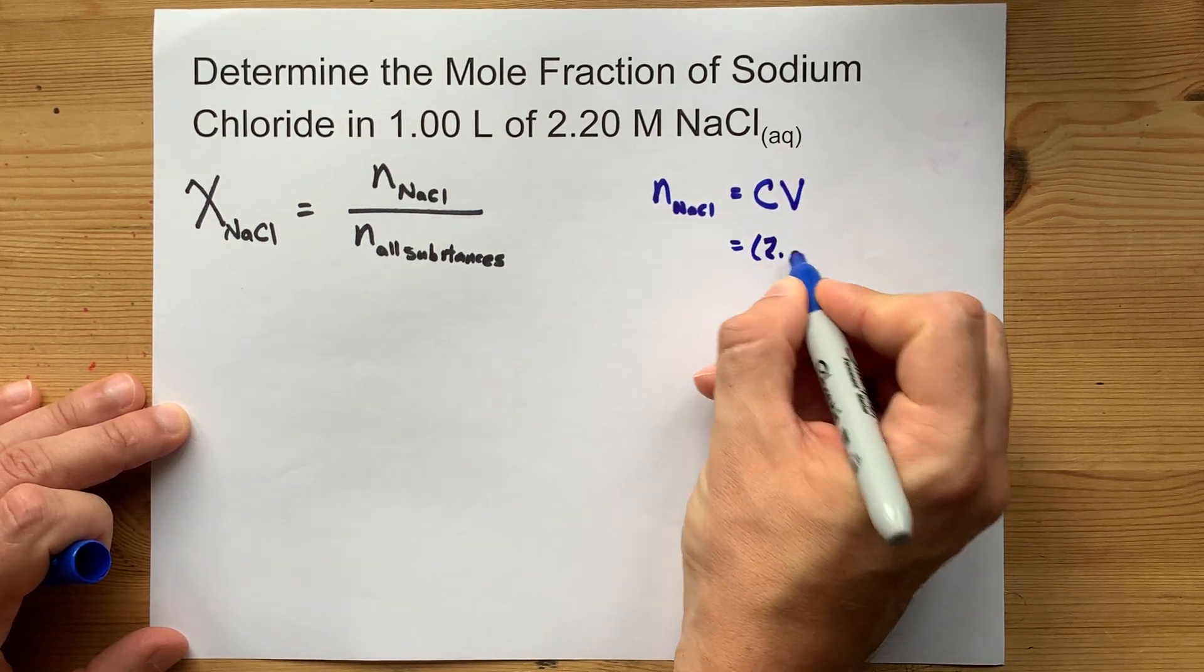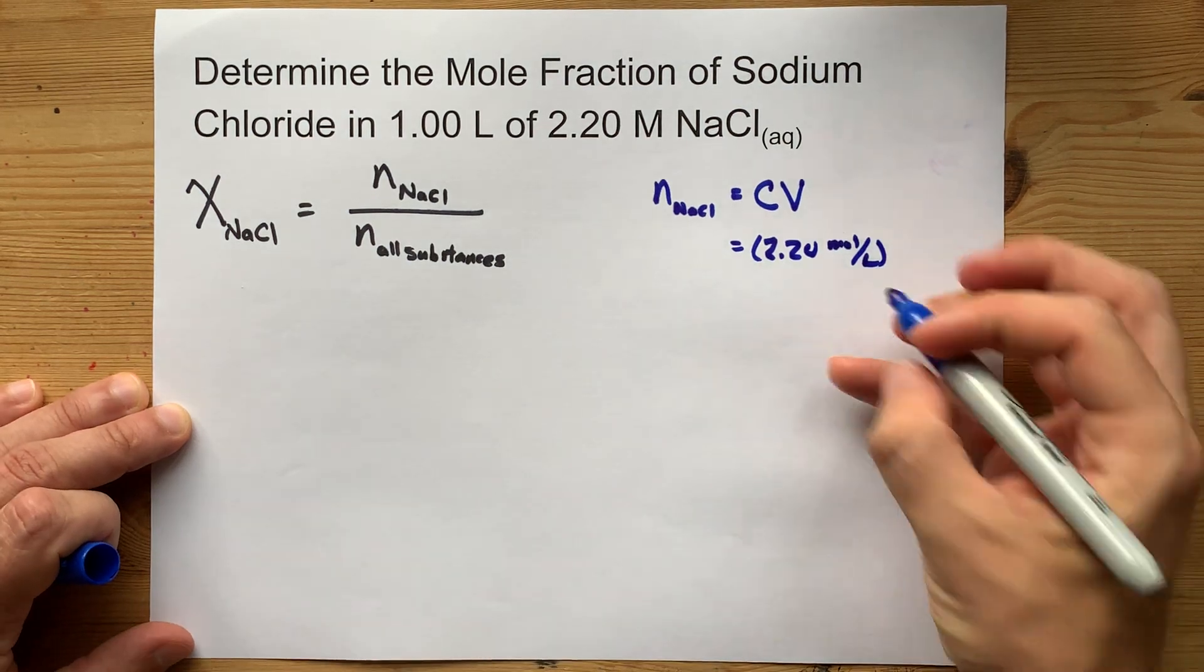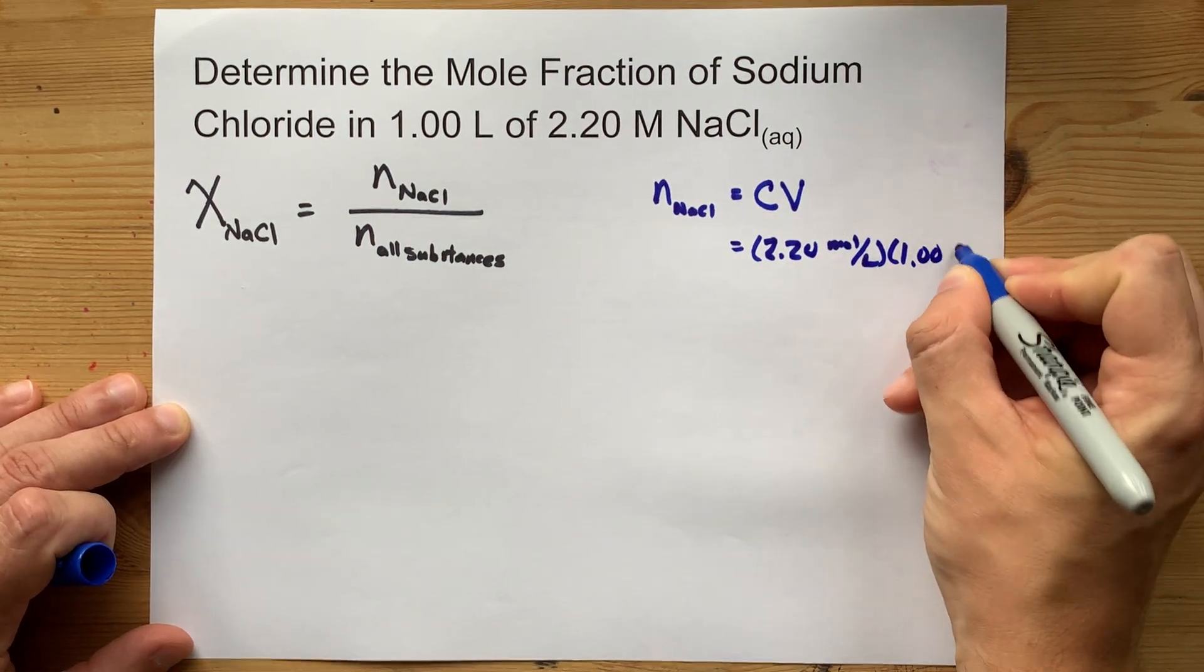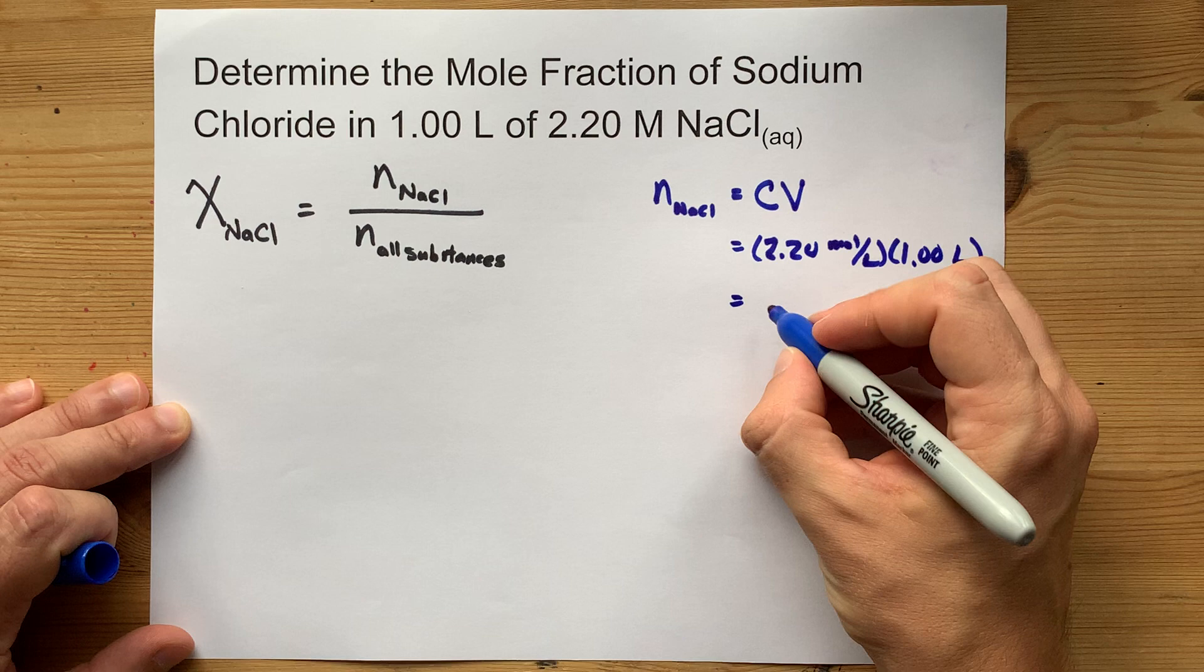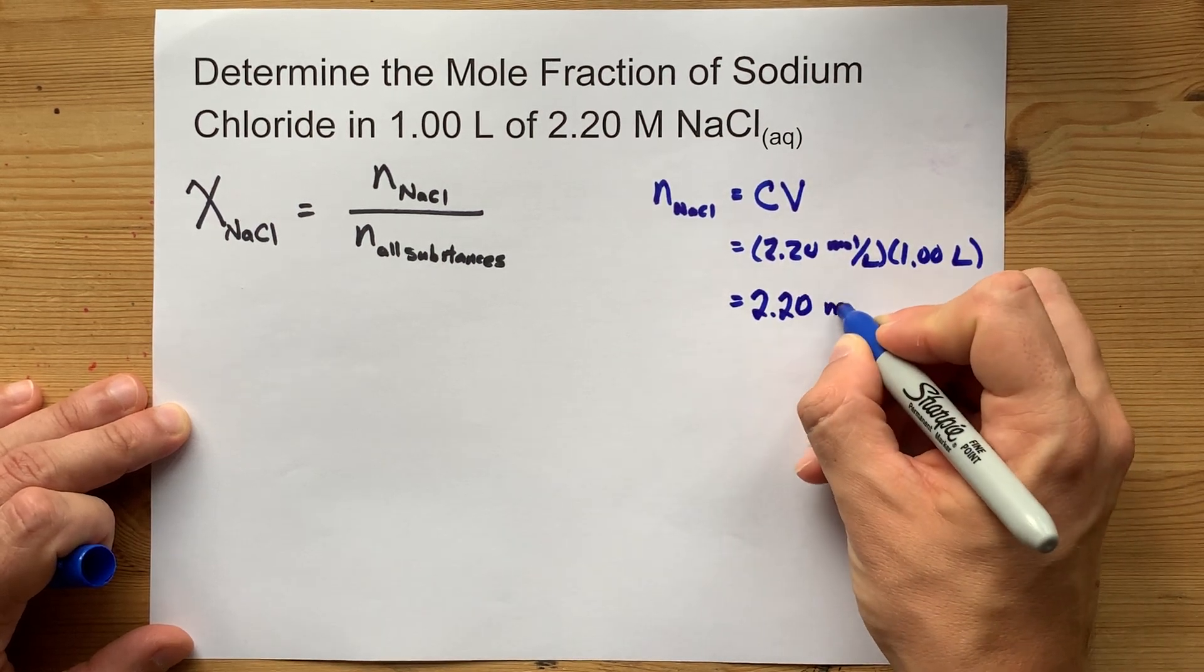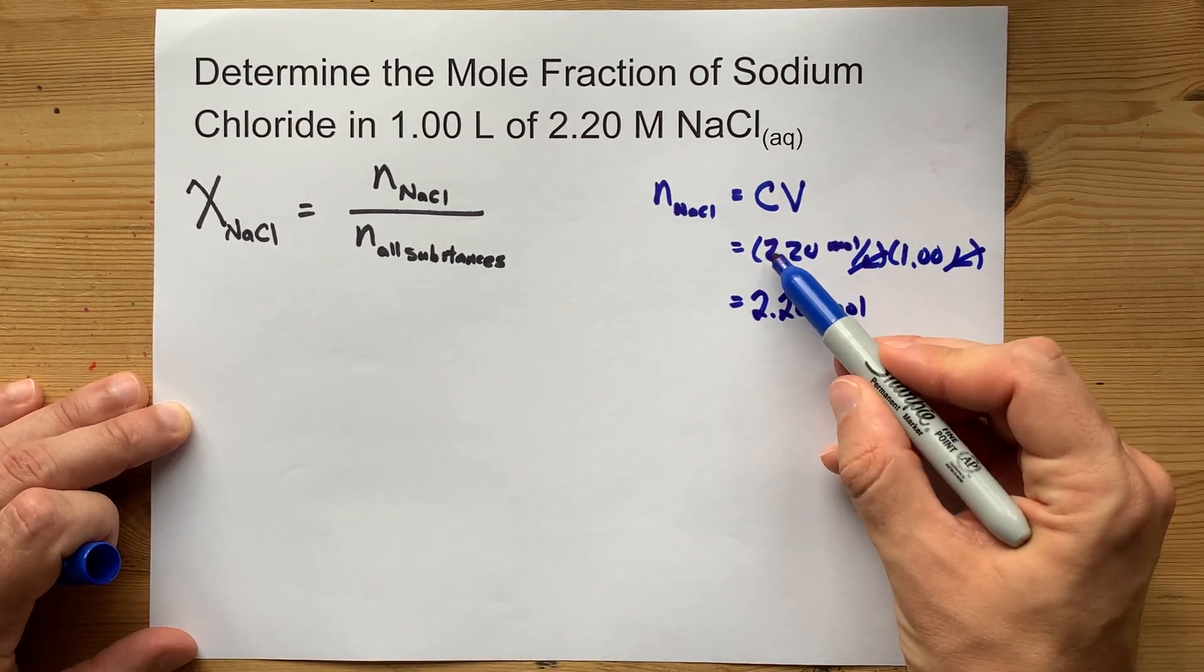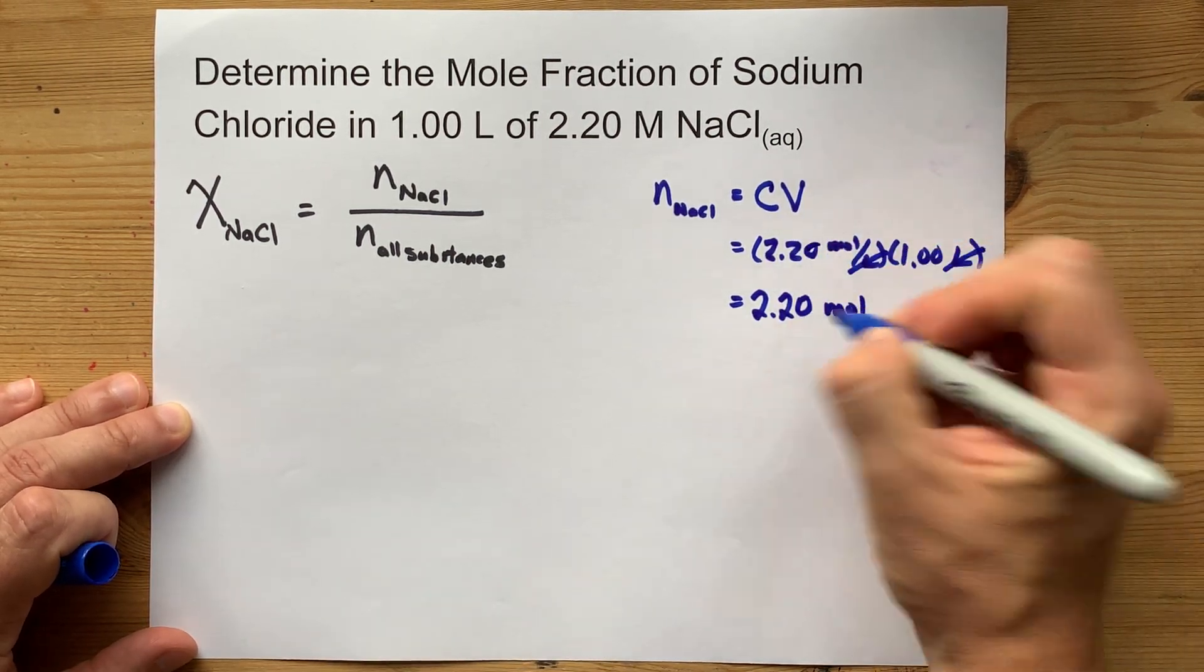The concentration was 2.20 moles per liter. You have one liter of it. You know, intuitively, you probably realize that that means you have 2.20 moles. See the over liters and liters cancel. 2.2 times 1 is 2.2.